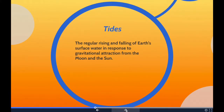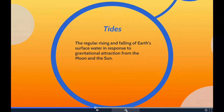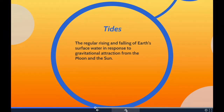Tides are the regular rising and falling of Earth's surface water in response to gravitational attraction from the moon and sun. The moon's gravity causes the oceans to bulge out in the direction of the moon, pulling upwards on Earth's water and producing a high tide. On the other side of the Earth, there is another high tide area produced where the moon's pull is weakest. As the Earth rotates on its axis, areas directly in line with the moon experience high tides. Each place on Earth experiences changes in water height throughout the day, and there are two high tides and two low tides each tidal day.